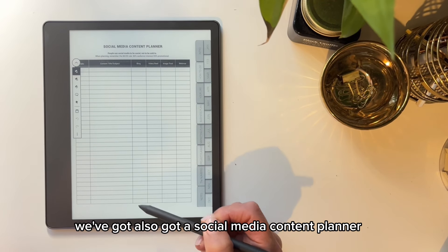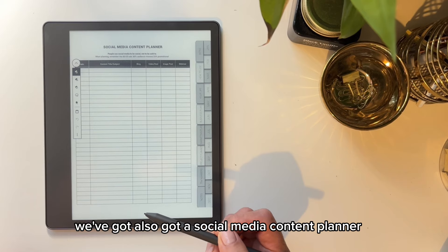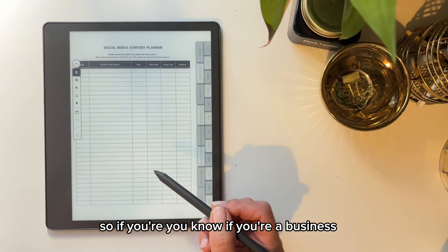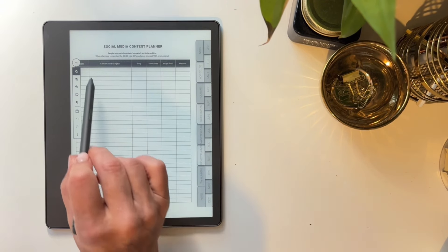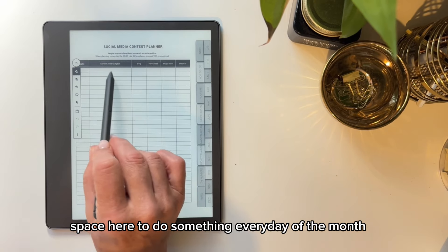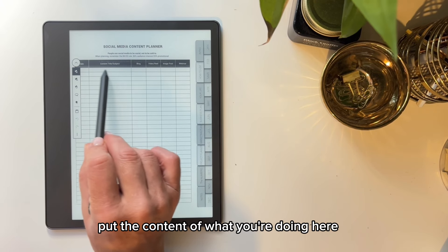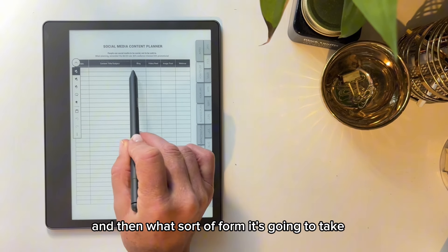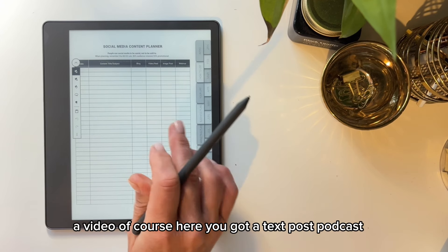Now in the planner here, we've also got a social media content planner. So if you're a business and you're planning your social media, there's space here to do something every day of the month, put the content of what you're doing here. And then what sort of form it's going to take, whether it's going to be a blog, a video.